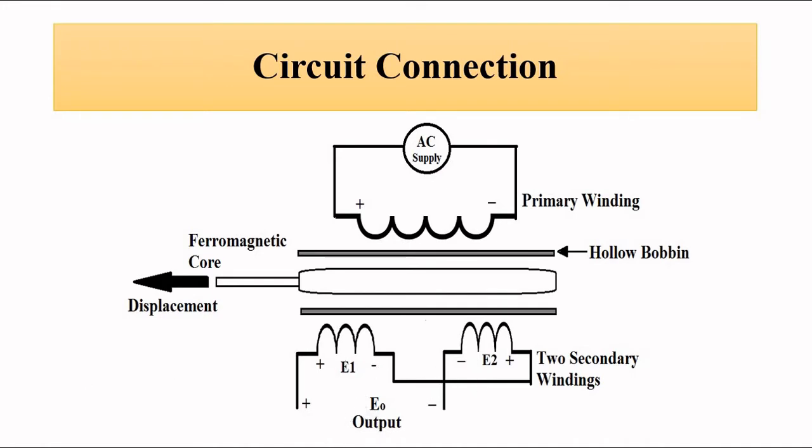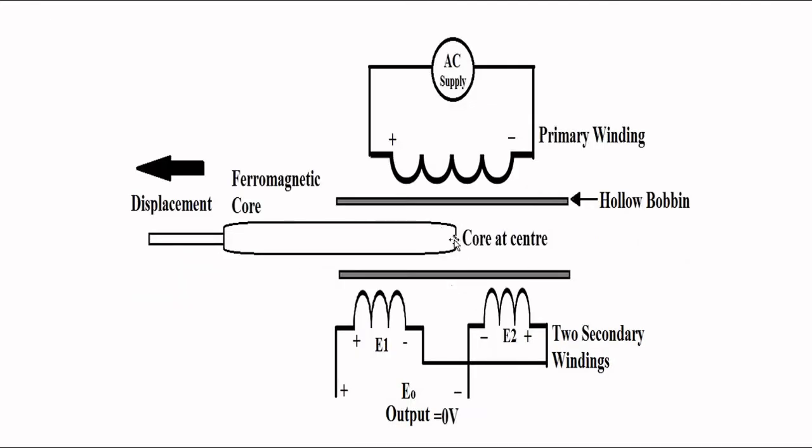The basic working principle of LVDT is such that when this ferromagnetic movable core is at the center in this position, the degree of coupling of the primary winding with each of these two secondary windings is the same, and in that case both the secondary winding voltages are the same.